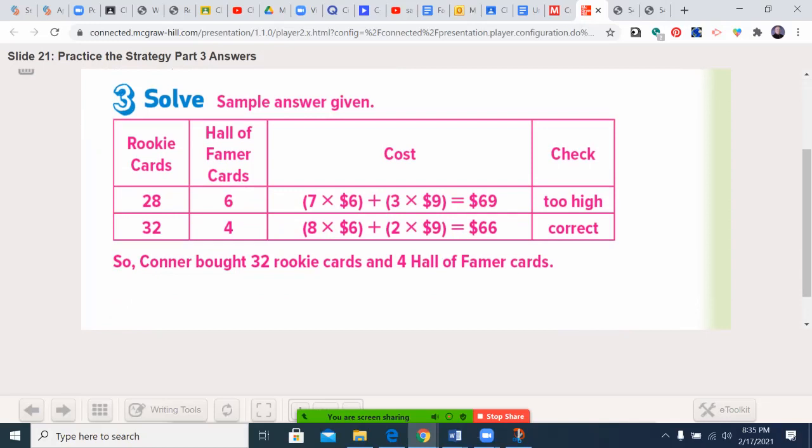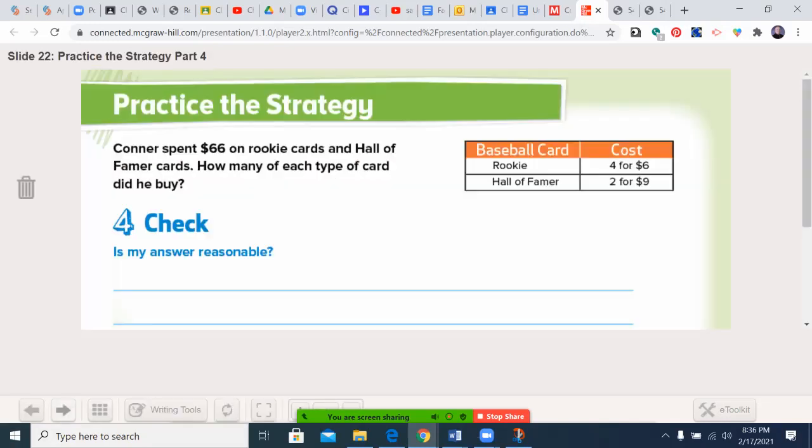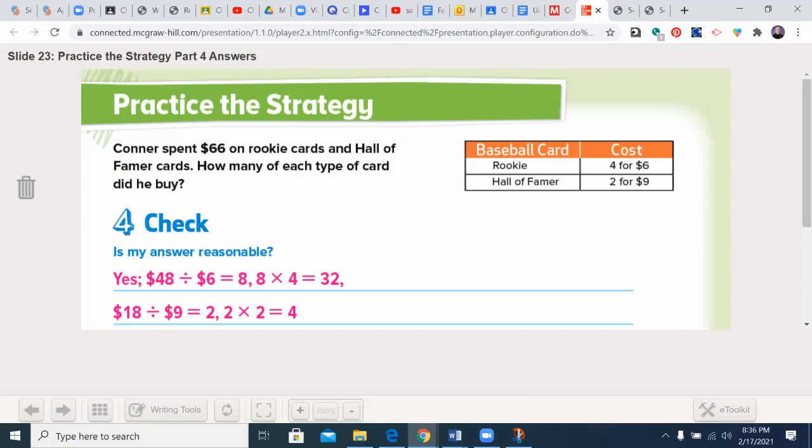Let's see what the book gave us. 28 cards—I would have to get six Hall of Famers, had been $3 too much. So Connor bought 32 rookie cards and four Hall of Famers. You could make a chart like this. You could also do it how I did it, without the chart. Is my answer reasonable? Yes, because 48 divided by six is eight, eight times four is 32. 18 divided by nine is two, and two times two is four. In many cases in the real world, you might skip the check, but it's good to at least give it an eyeball.